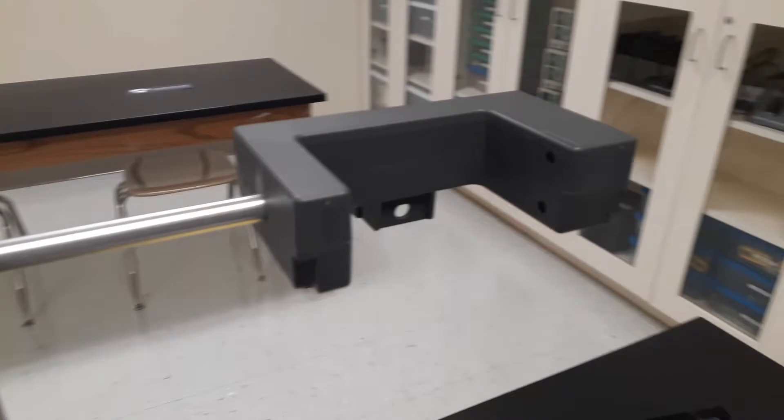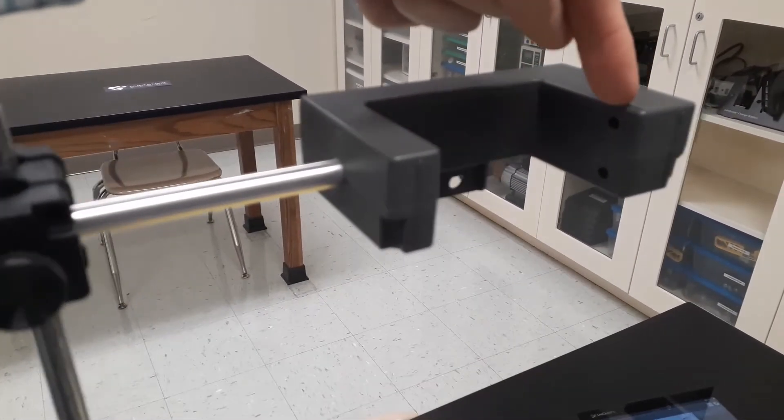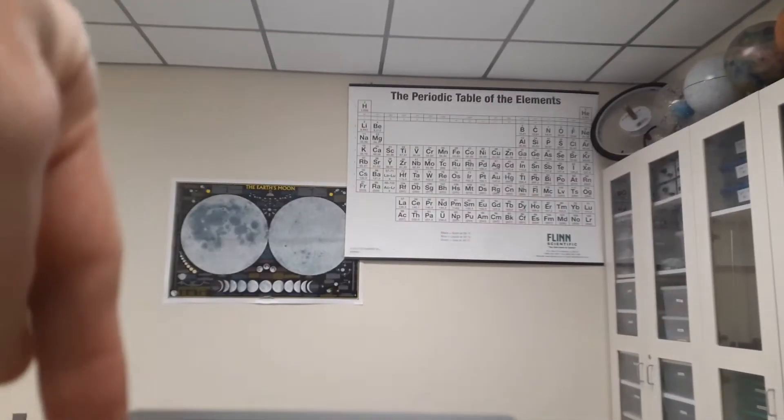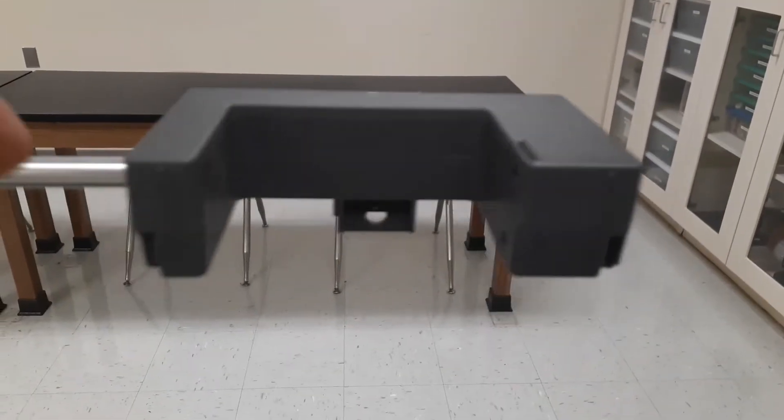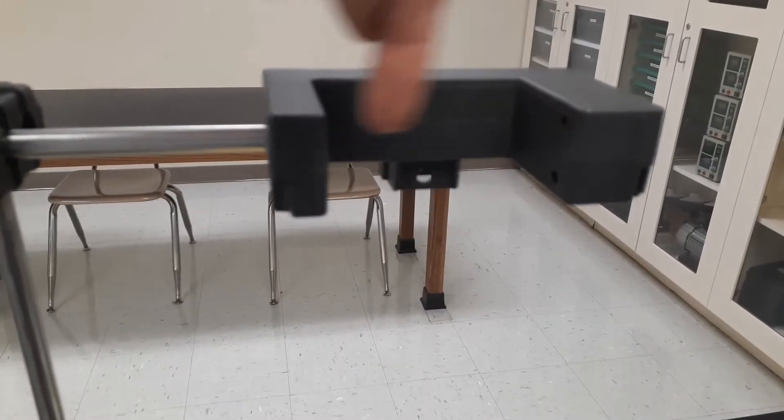So this is just a clear piece of plastic with some black stripes painted on it. This picket fence is going to fall through our photo gate. And the photo gate sends a signal from one side to the other side over here. As it does that, it's going to know when something gets in here and interrupts this signal, blocks the signal from one side to the other.